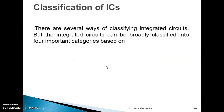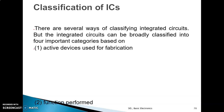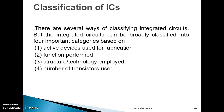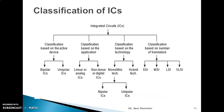There are a number of ways to classify ICs. The main categories broadly classify them by: first, active devices used in fabrication; then, functions performed; then, structure or technology employed; and number of transistors used.